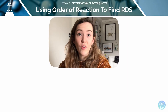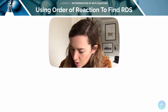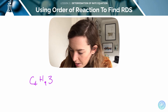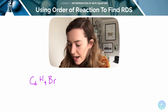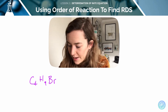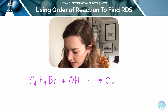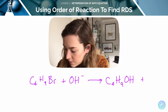Using order of reaction to find the rate determining step — let's use an example here. We have C4H9Br reacting with an alkali. It has two possible reaction mechanisms, but the overall reaction gives us butanol plus bromine.